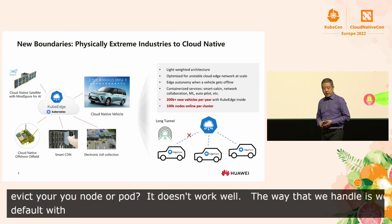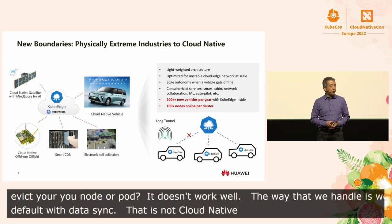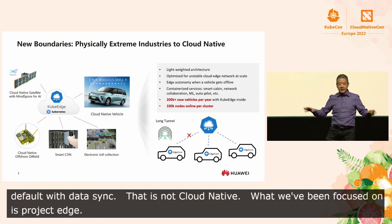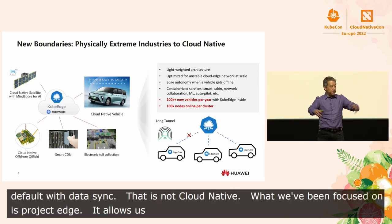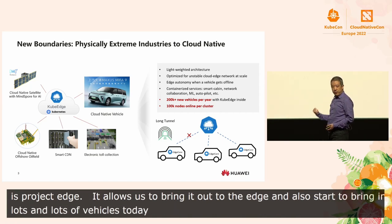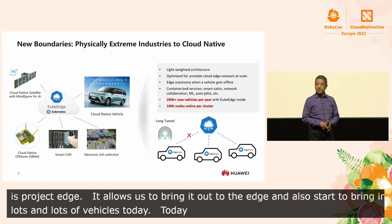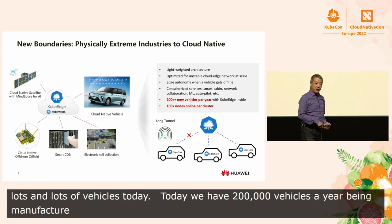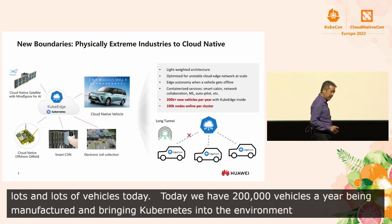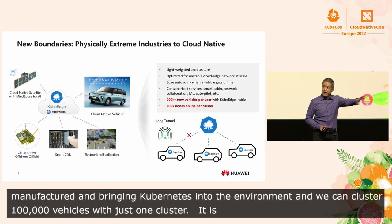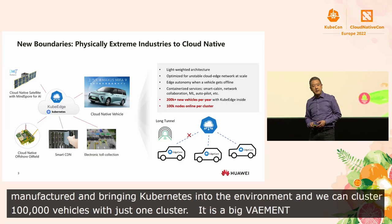So what we've been focused on is a project called KubeEdge, which allows us to bring Kubernetes out to the edge. We can do full state sync, and we can start to bring in lots and lots of vehicles. Today, we already have over 200,000 vehicles a year being manufactured with KubeEdge installed, bringing Kubernetes into these different environments. And we can manage a cluster of 100,000 vehicles with just one cluster. So it's a really, really big advancement in terms of how we push Kubernetes into areas that look nothing like a traditional cloud data center.